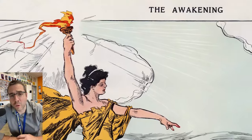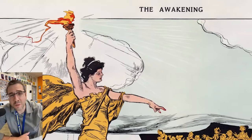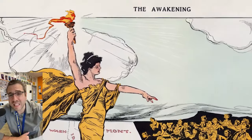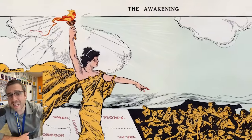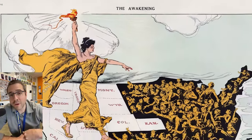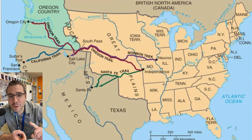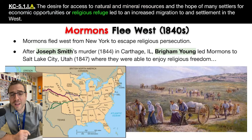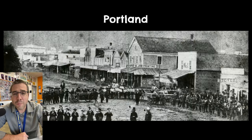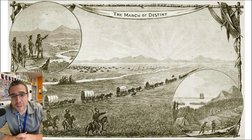Women going out west served major roles in society there. They would follow their husbands, work on the farms, and open businesses like restaurants, boarding houses, and inns. Their contributions led in large part to Wyoming being the first state to give women the right to vote in 1869. Americans went west for farmland, for gold, for religious freedom. They founded major cities like Denver, San Francisco, Salt Lake City, and Portland, Oregon, and ultimately manifested America's destiny out west to the Pacific Ocean.